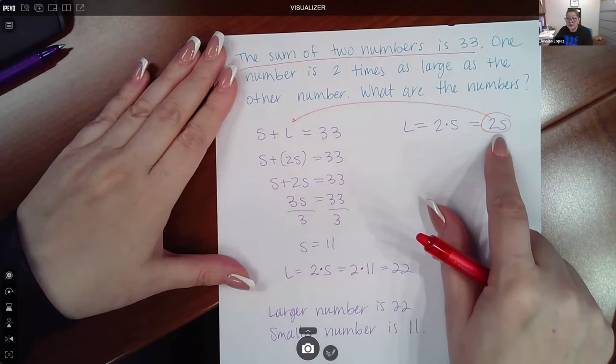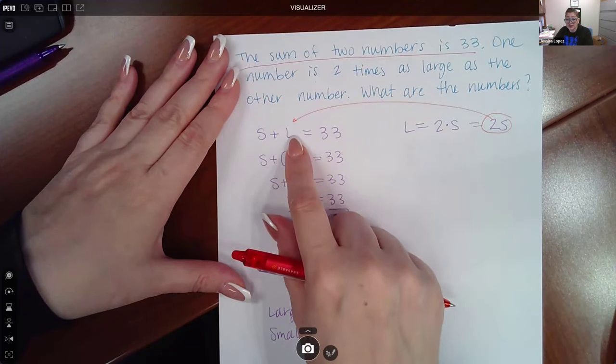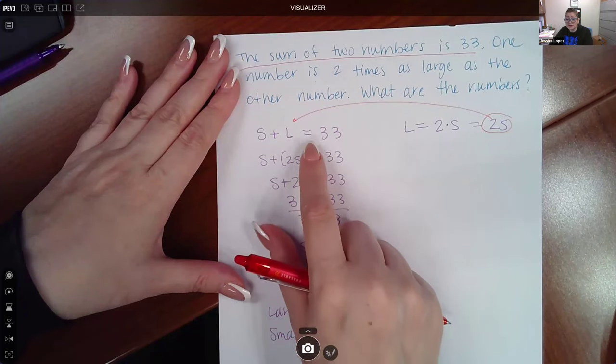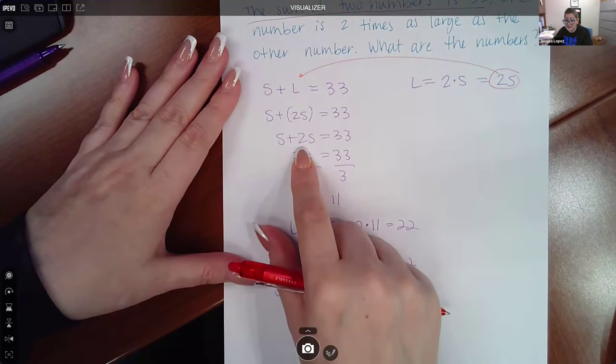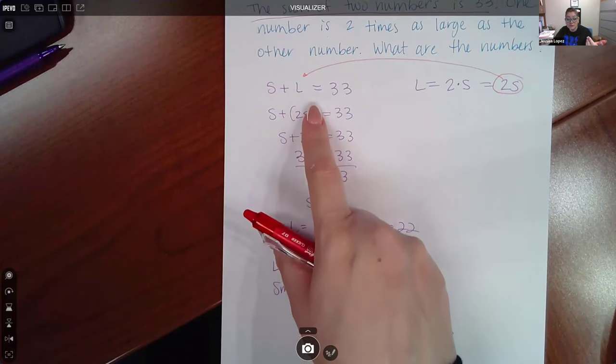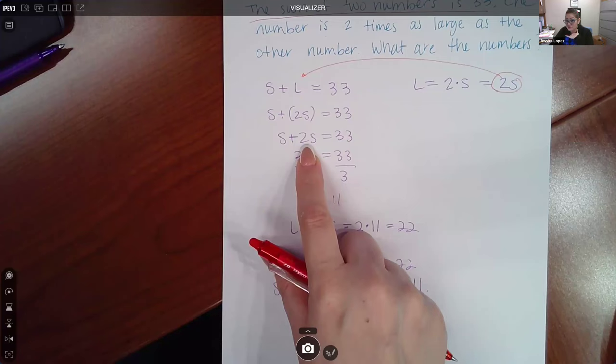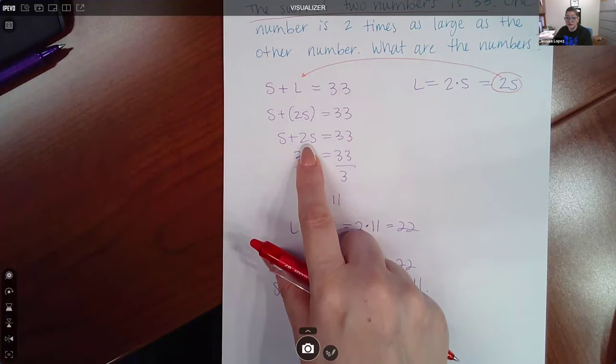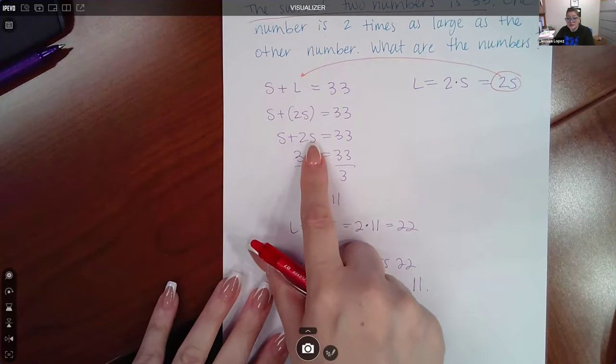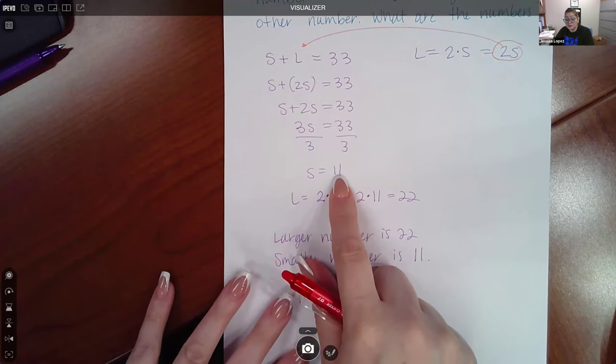Two times S can just be written as two S. Since one of the variables is already isolated, I'm going to use substitution and replace the L with two S. There's no coefficient to multiply, no exponent to apply, so the parentheses are not necessary. However, as you get further into this topic, sometimes there is a negative to distribute, sometimes there is a power to apply. Never just substitute something in without putting it in parentheses initially. Once it's in parentheses, then you can decide whether they're unnecessary. Once I had this, I combined my like terms and got three S. So to solve for S, I divided both sides by three and that resulted in S equaling 11.